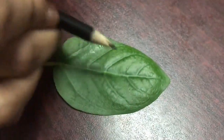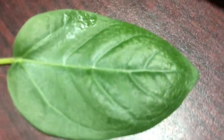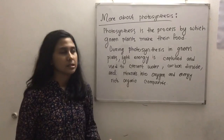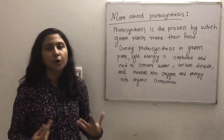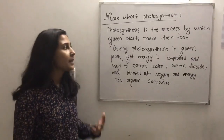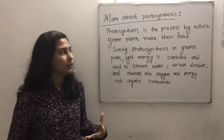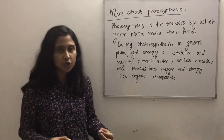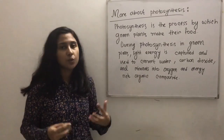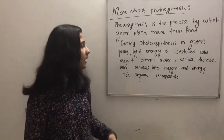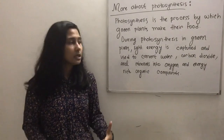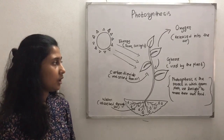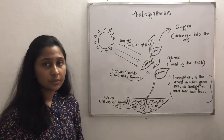Photosynthesis is the process by which green plants make their own food. During photosynthesis in green plants, light energy is captured and used to convert water, carbon dioxide, and minerals into oxygen and energy-rich organic compounds.